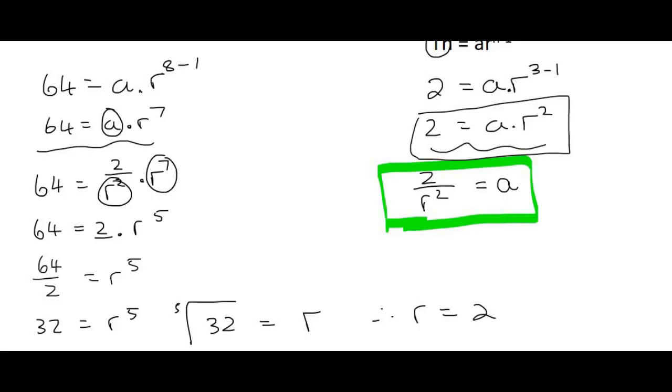Now that R is equal to 2, you can just plug that in over here. And so A is going to be equal to 2 over 2 to the power of 2. And so A is going to be equal to 2 over 4. Therefore, A is a half. So A is a half and R is 2.